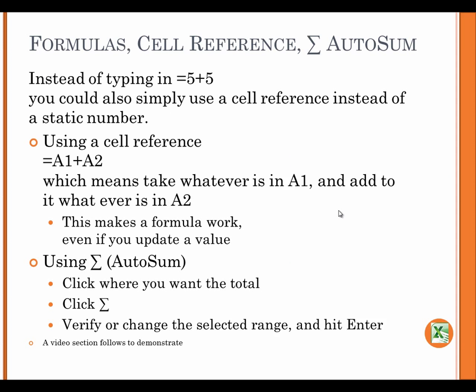Formulas, cell reference, Sigma Autosum. Instead of typing in equals 5 plus 5, you could also simply use a cell reference instead of a static number. Using a cell reference: Equals A1 plus A2, which means take whatever is in A1 and add to it whatever is in A2. This makes the formula work even if you update a value. Using Sigma Autosum: Click where you want the total. Click Sigma. Verify or change the selected range and hit enter.